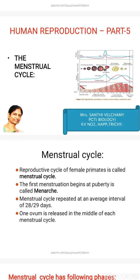Good morning children. Today let us start with part 5 of the human reproduction chapter. We are going to cover the menstrual cycle.